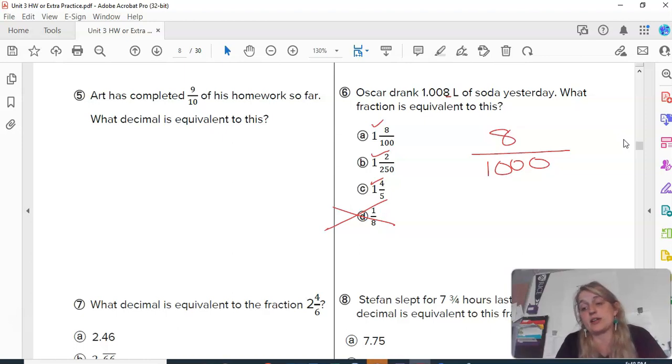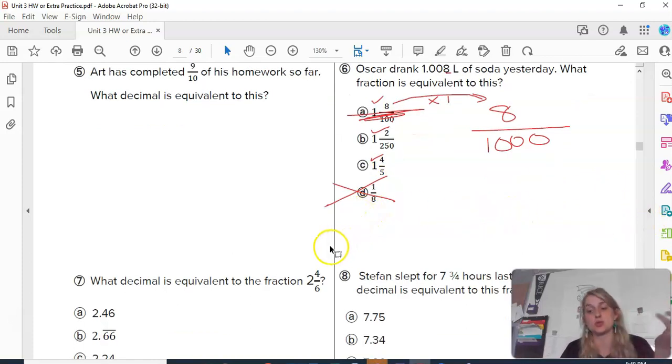Choice number one is you can simplify eight over a thousand. Think about, okay, what do I know about both eight and a thousand? They're both even numbers. I could probably divide them by two. That's also probably not their greatest common factor. I don't know. Dividing, not my favorite thing. Option number two is you can look at your multiple choice, because you already have the answer somewhere here. And you can try to figure out, okay, well, eight times what equals eight? Eight times one. Does a hundred times one equal a thousand? No, that means A is not my answer. Two times what number equals eight? Two times four. Well, does four 250s make a thousand? I don't know. You tell me. Four times two equals eight. Does five times two equal ten thousand? So that's how you can figure it out as well. You don't actually need to simplify. If it's a multiple choice, you can check your answers.